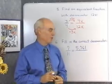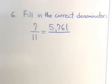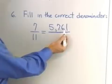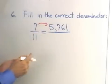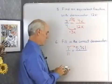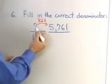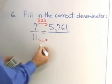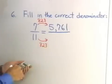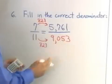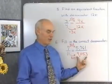The next problem requires a calculator. It says: fill in the correct denominator, given that 7 over 11 is equal to 5,761 over something. To see how I go from 7 to 5,761, I'll take 5,761 and divide it by 7 to see what I multiplied by. 5,761 divided by 7 is 823. That 823 is the same number I'll multiply 11 by to get the new denominator. 823 times 11 gives 9,053. So 5,761 over 9,053 is exactly the same as the fraction 7/11.